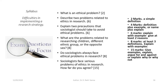Let us now look at a few questions. What is an ethical problem? Describe two problems related to ethics in research. Explain two precautions that sociologists should take to avoid ethical problems. What are the problems related to researching children, different ethnic groups, or the opposite sex? Do sociologists always face ethical problems in research — 8 marks. Sociologists face serious problems of ethics in research — how far do you agree? 15 marks.